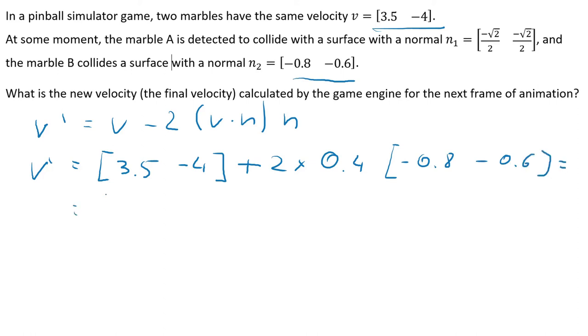So it is 3.5 minus 4. I have to rewrite the first bracket, plus 2 times 0.4, it's 0.8, times negative 0.8, negative 0.6. So again, 3.5 negative 4 plus 0.8 times negative 0.8, it's negative 0.64, and 0.8 times 0.6, it is 8 times 6, it's 48, so it's negative 0.48.